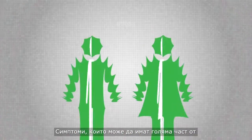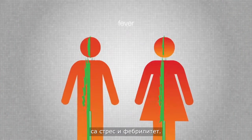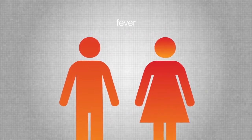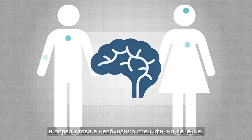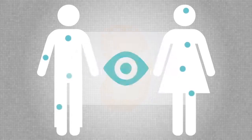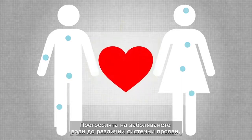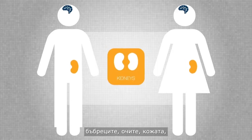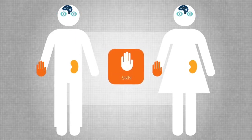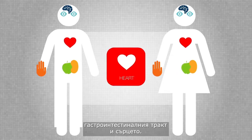Symptoms that can be present in a large proportion of patients with Fabry disease include stress and fever. Fabry disease affects different organs which require specific treatment. Disease progression leads to a variety of systemic manifestations, including manifestations of the nervous system, kidneys, eyes, skin, gastrointestinal tract, and heart.